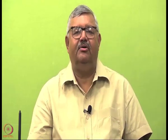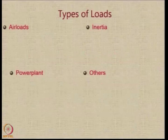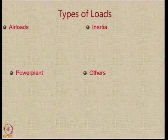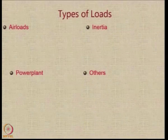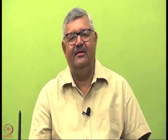Let us have a look at how the loads acting on the aircraft are estimated or specified for various conditions. There are essentially 4 types of loads. One is the air loads, which basically come because of the relative motion between the aircraft and the ambient air. There are inertia loads, which come due to changes in the acceleration to which the aircraft is imposed. There are power plant loads, which come due to the operation of the power plant. And there are miscellaneous loads, which are categorized under others.